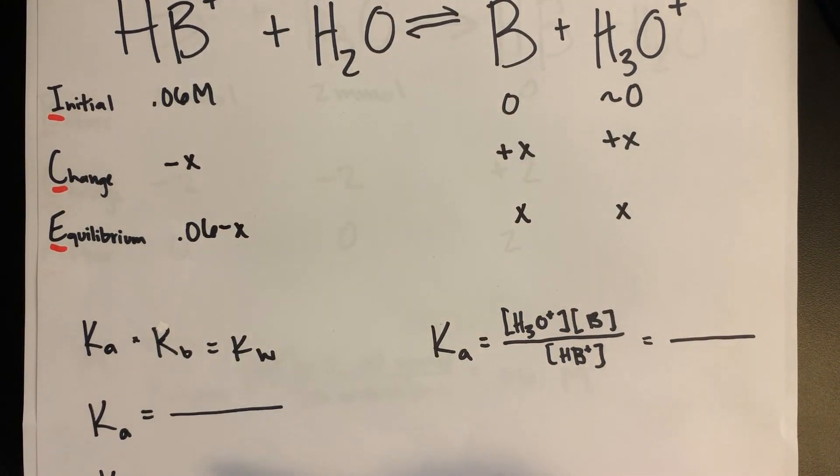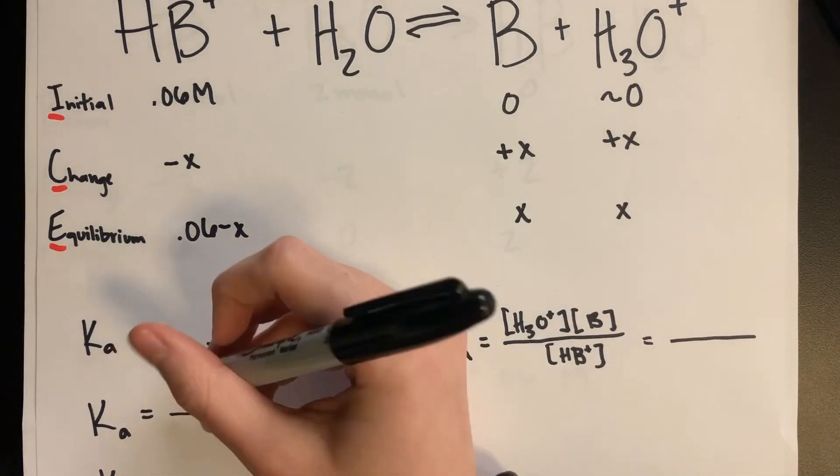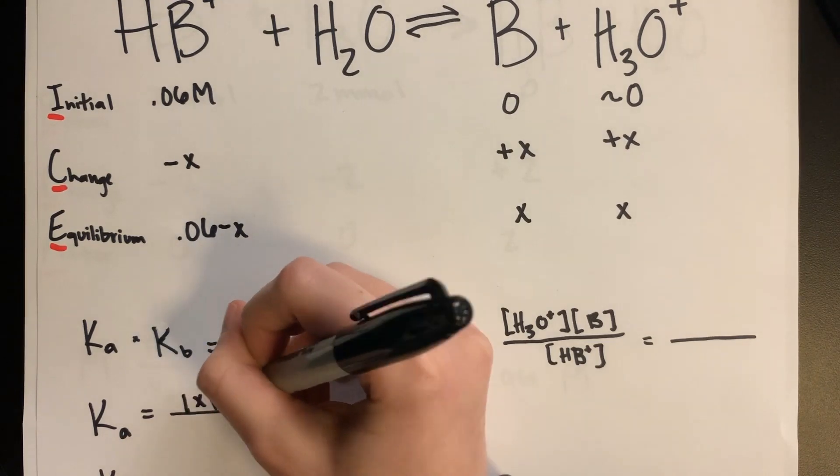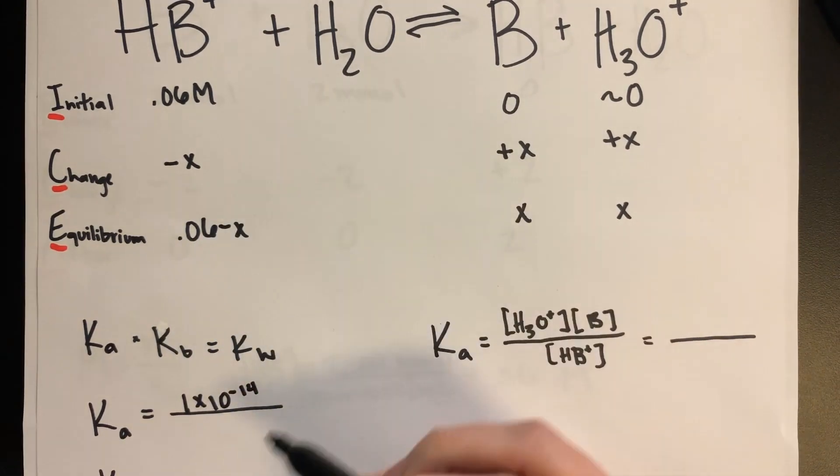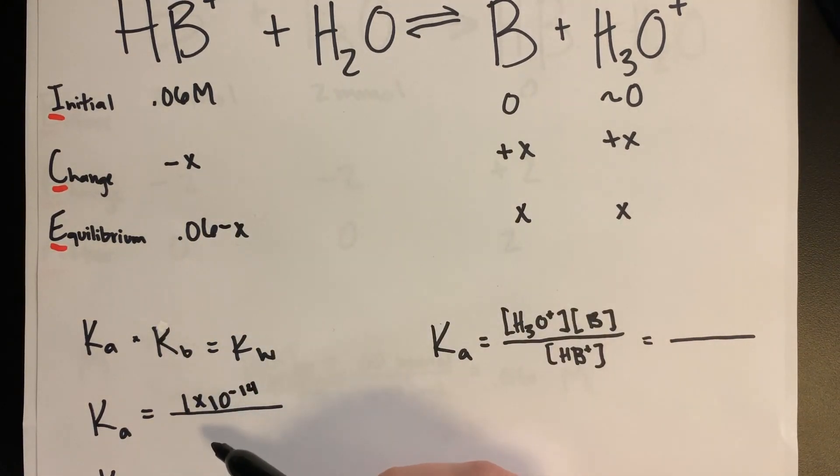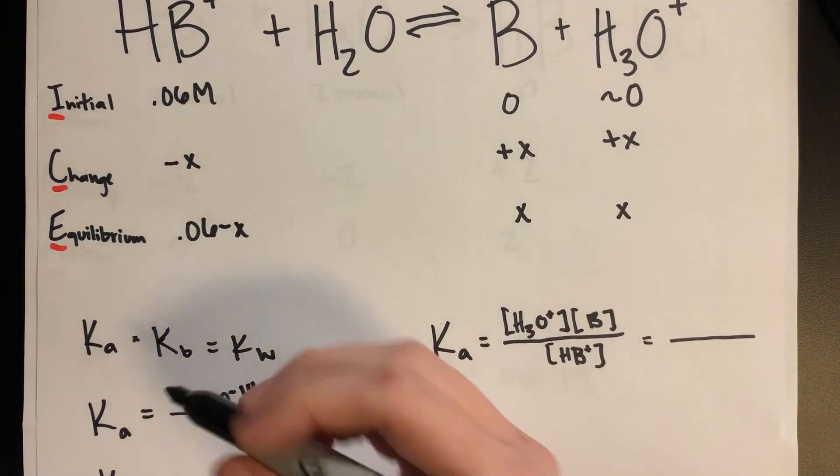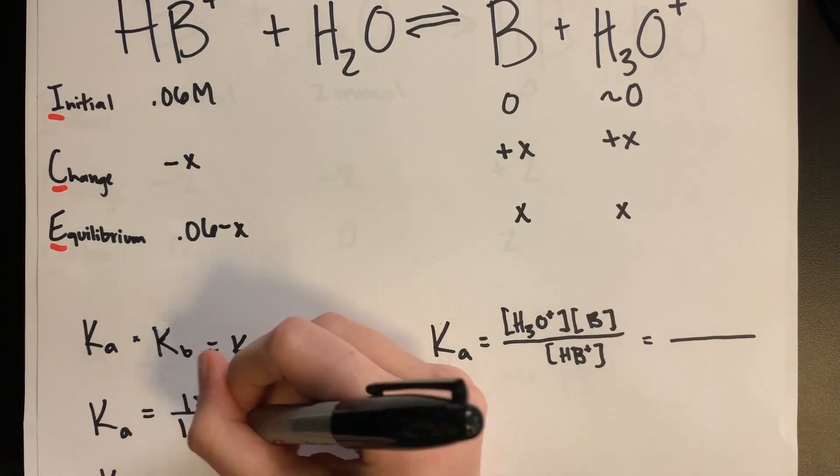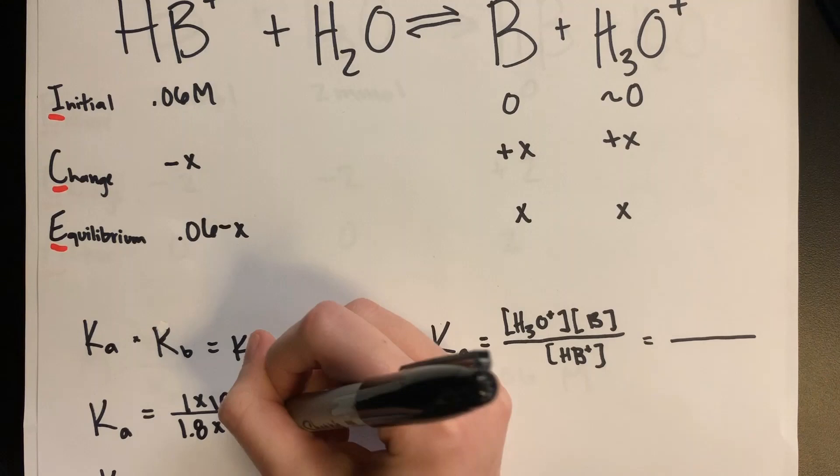Since we use the weak acid for the equilibrium calculations, we need to calculate the Ka value, which we can do by using Ka times Kb equals Kw, and rearrange to solve for Ka, which would be 1 times 10 to the negative 14, and using the Kb given at the beginning of the problem, which was 1.8 times 10 to the negative 5.